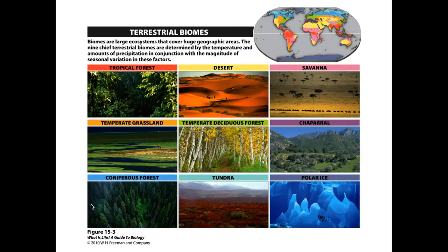As you go more equatorially into higher latitudes, you get into the coniferous forests. As it gets even warmer, you get into a range of chaparral, temperate deciduous forests, and temperate grasslands. As you get more equatorial, you get the savannas, and finally the tropical forests.